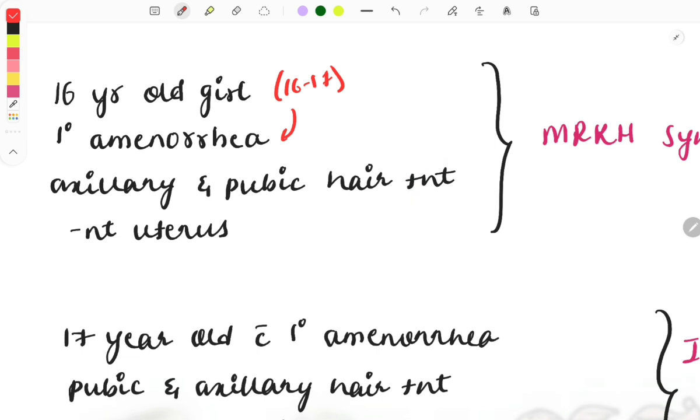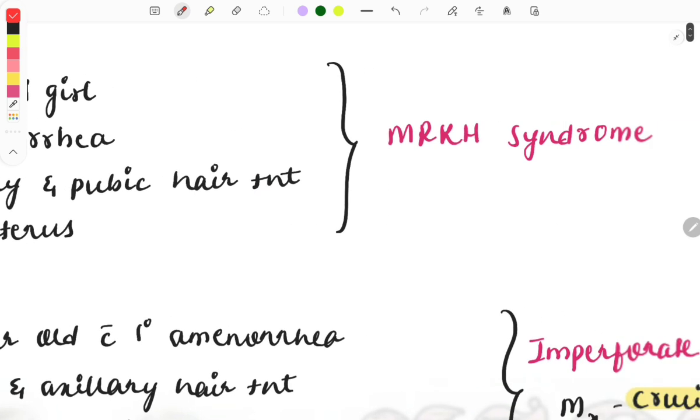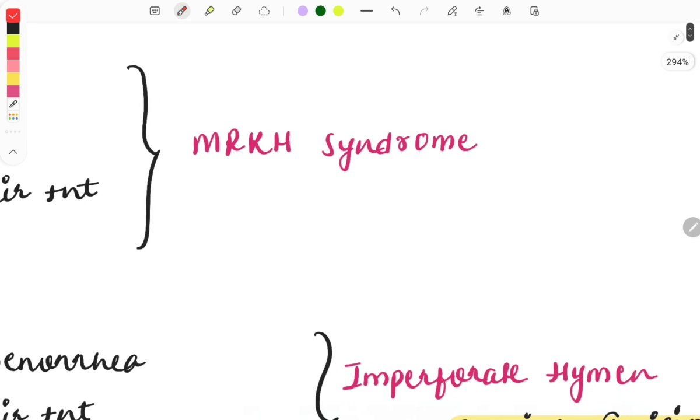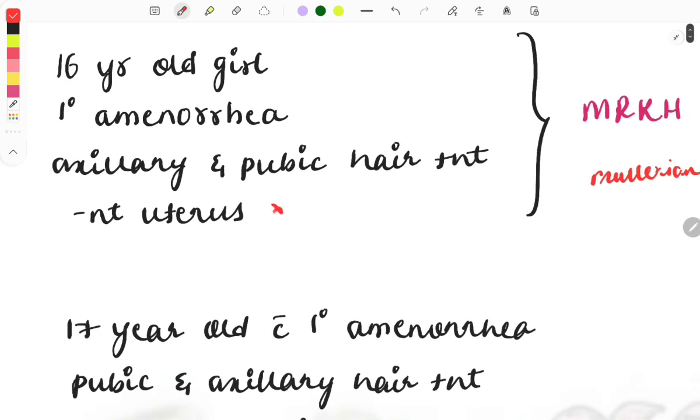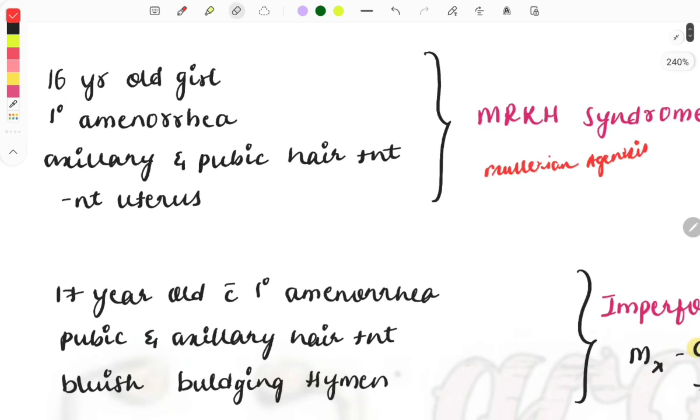The diagnosis is Mullerian agenesis, also called MRKH syndrome. Sometimes you can also describe absent fallopian tube, absent vagina, or cervix - all these things are related with Mullerian agenesis. These are the classical findings and hint words which you must look for in the question.